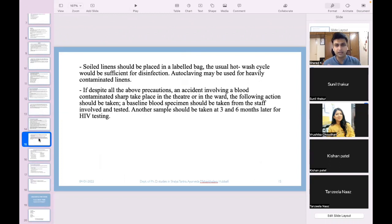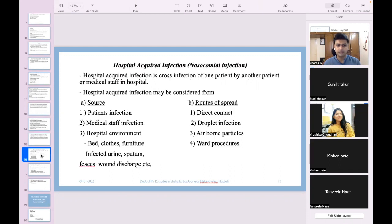Soiled linens should be placed in a labeled bag. The usual ward wash cycle would be sufficient for disinfection. Autoclaving may be used for heavily contaminated linens. Usually if we use disposable linens that is very good, so we just dispose it post usage, but it will increase the cost. If despite all precautions an accident involving blood contaminated sharps takes place in theater, ward, clinic, OPD or IPD, then following actions should be taken: a baseline blood specimen should be taken from the staff involved, whoever has been pricked. Then tested, another sample should be taken at 3 and 6 months later for HIV testing. Till then they have to be put on antiretroviral therapy.